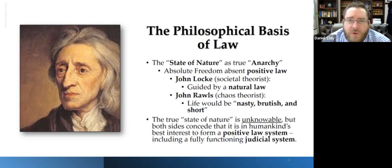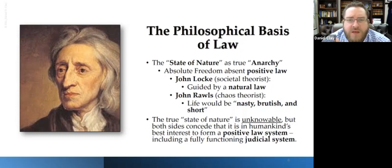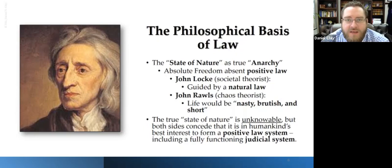Both the chaos theorists and the societal theorists concede that it is in the best interest of mankind to form a positive law system, including a fully functional judicial system. The judicial system takes the law, interprets it, and applies it. Whether you're very far left or very far right, there's pretty much universal agreement that we need a legal system, a judicial system, where cooler heads prevail and there are written-down rules — so we're not in a state of nasty, brutish, and short life, and we're not worried about our personal property.